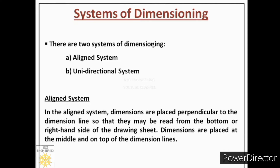First, I will tell you the definition of the aligned system, then I will explain it through animation. In the aligned system, dimensions are placed perpendicular to the dimension line so that they may be read from the bottom or right-hand side of the drawing sheet. Dimensions are placed at the middle and on top of the dimension lines.